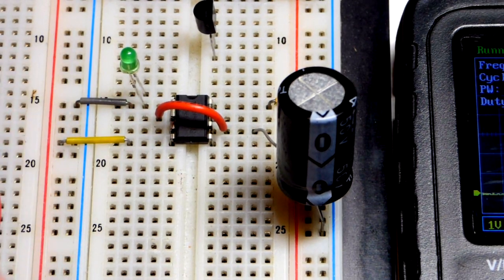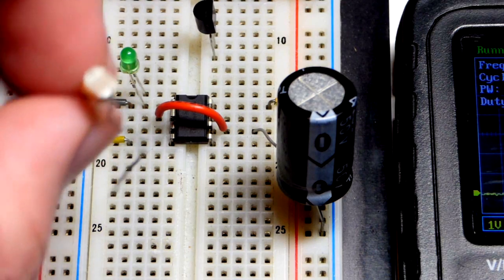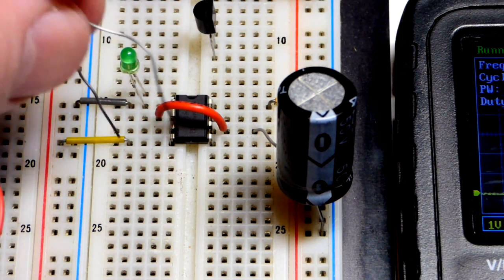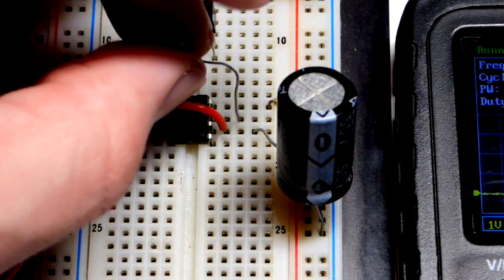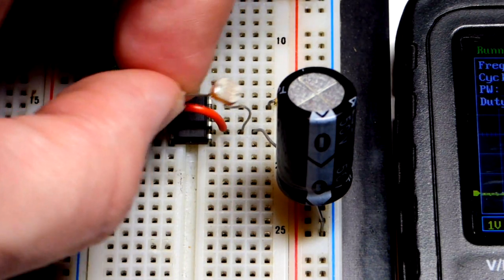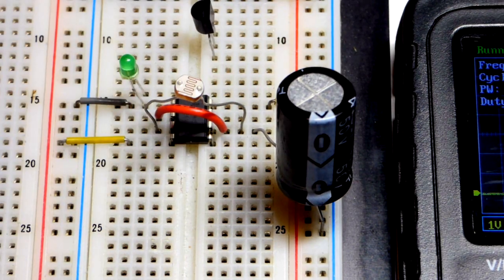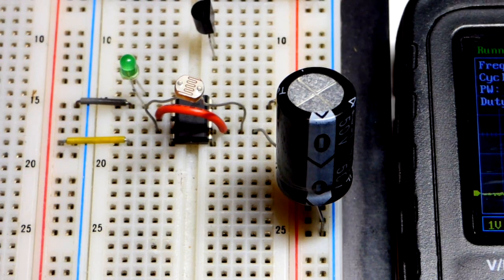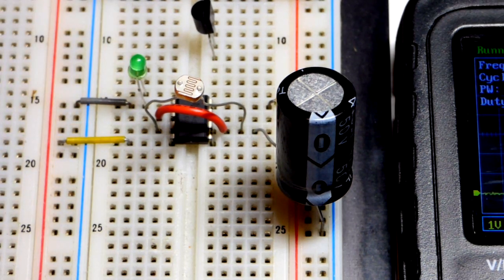Now we're going to take this light-dependent resistor, which is going to control how fast the capacitor charges and discharges. So we're going to put that to the output right there. So the output will be charging and discharging the capacitor. Now I want a visual.